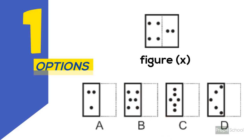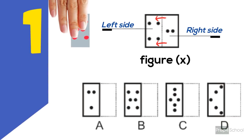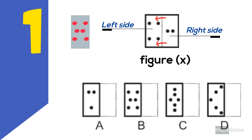Let's start with an example. You can see there is a paper with four dots marked on its left side and two dots on its right side. Let's find out how it will look after folding through the dotted line. The right side dots come to the left side, so totally six dots come in a single position.